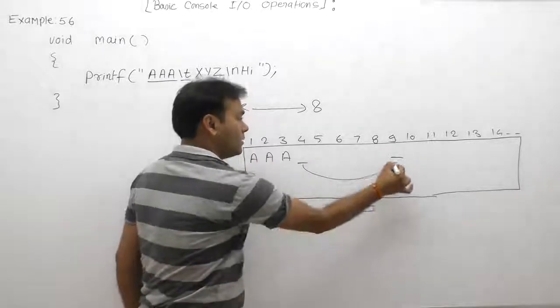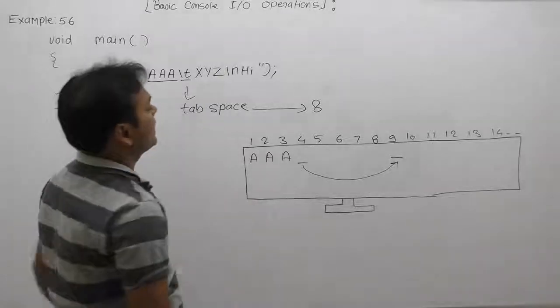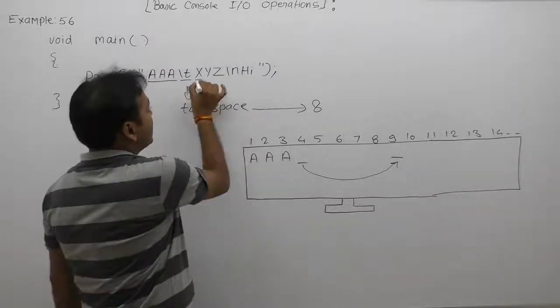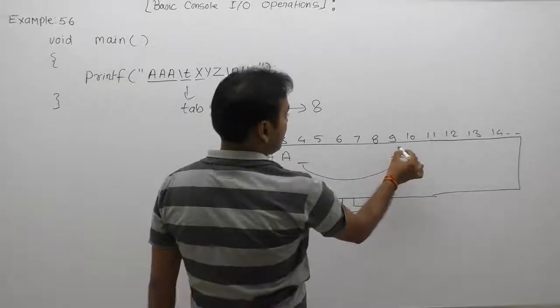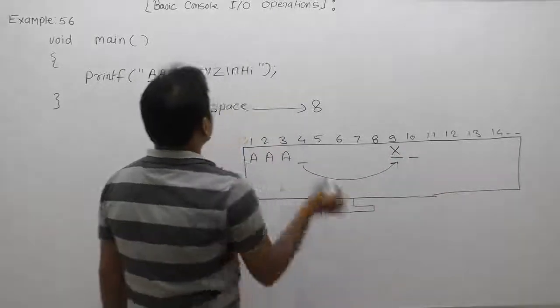The cursor will be moved to after the eighth position. The cursor will be available at the ninth place. Then the next character is X, therefore X is printed at position nine. Then the cursor will be moved to the next place.